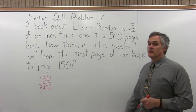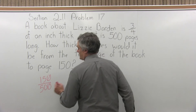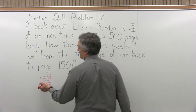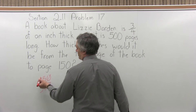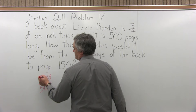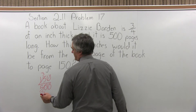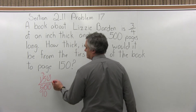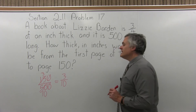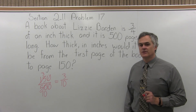Now 150 over 500 can reduce pretty nicely. First, I can slice off a zero, leaving 15 over 50. Both reduce by five: five divides into 15 three times and into 50 ten times. So we've read 3 tenths of the book so far.